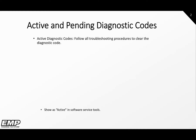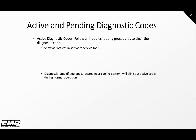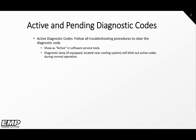There are two types of diagnostic codes: active and pending codes. Active codes will display as active when viewed in the service tool. The diagnostic lamp, if equipped, will illuminate and blink out the active codes during normal operation. The diagnostic lamp is normally located near the cooling system.